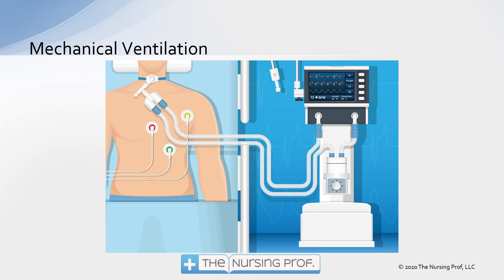In this case here we have a tracheostomy tube being used. The reasoning for having two different limbs — two different tubes going to and from the ventilator — is that we want to be able to measure how much air is going in and out of the patient, we want to be able to humidify the air going into the patient's lungs, and at the same time we don't want that exhaled air and potentially bacteria to be mixing with the inhaled air.